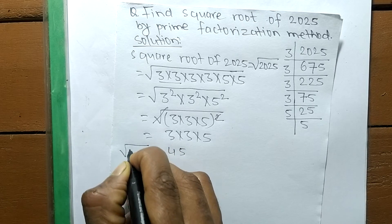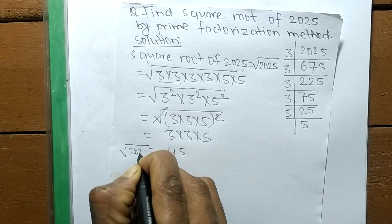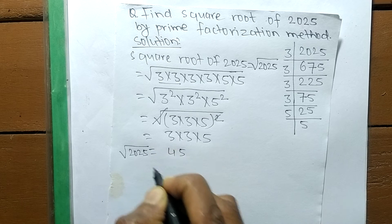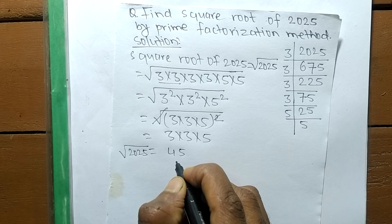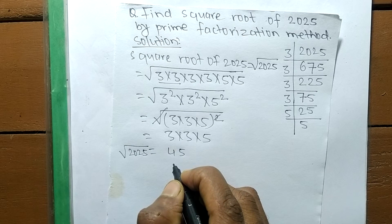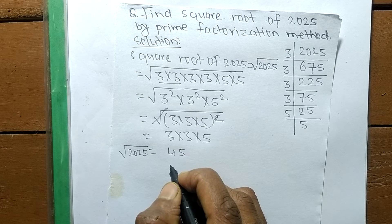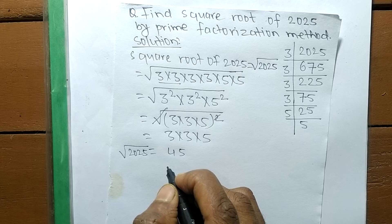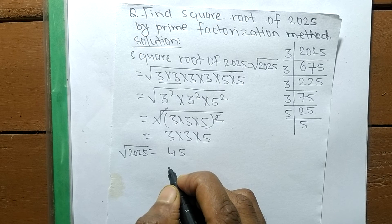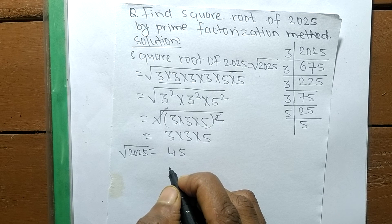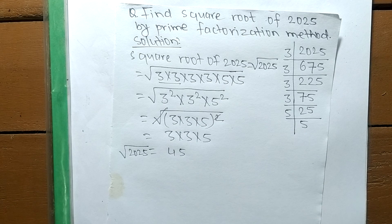So the square root of 2025 is 45. That's all for today. If you have any question related to math and science, just comment your question below and we shall provide a video solution of your question.